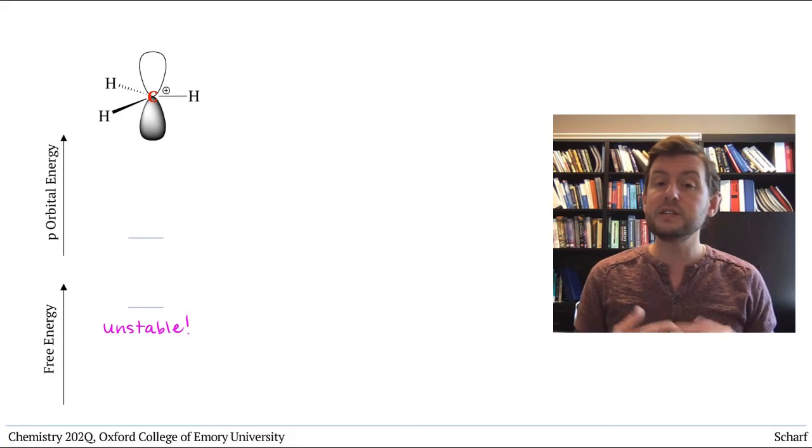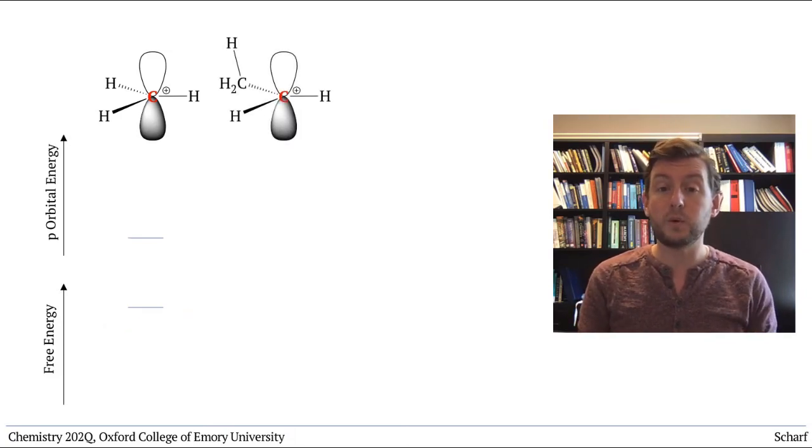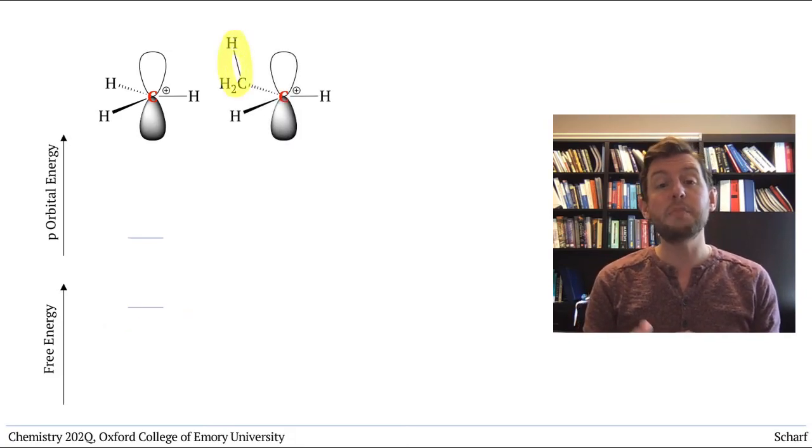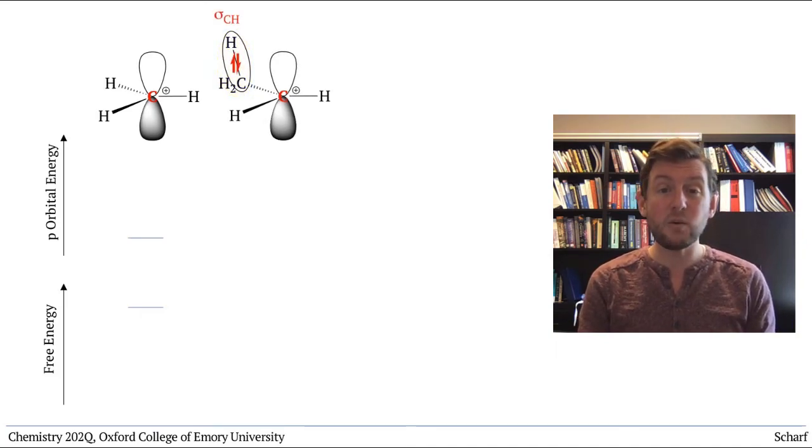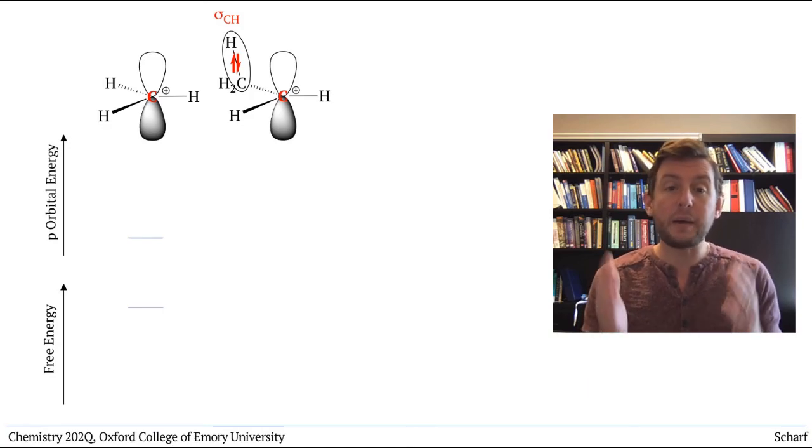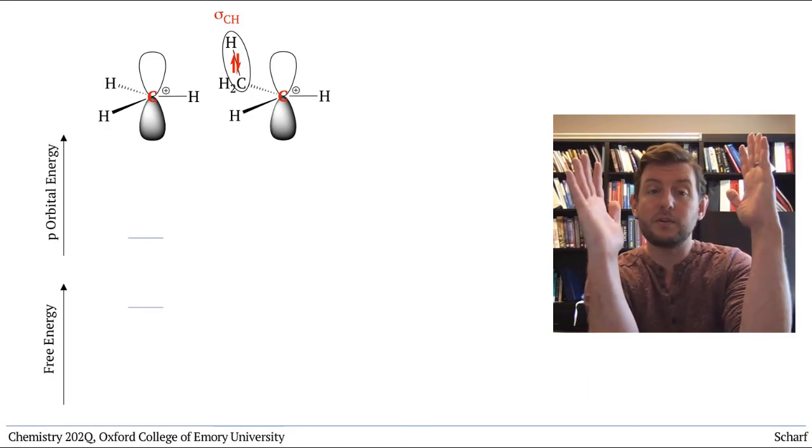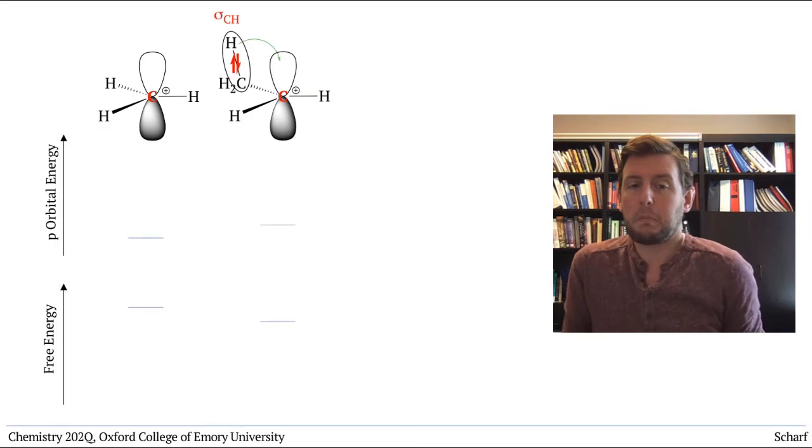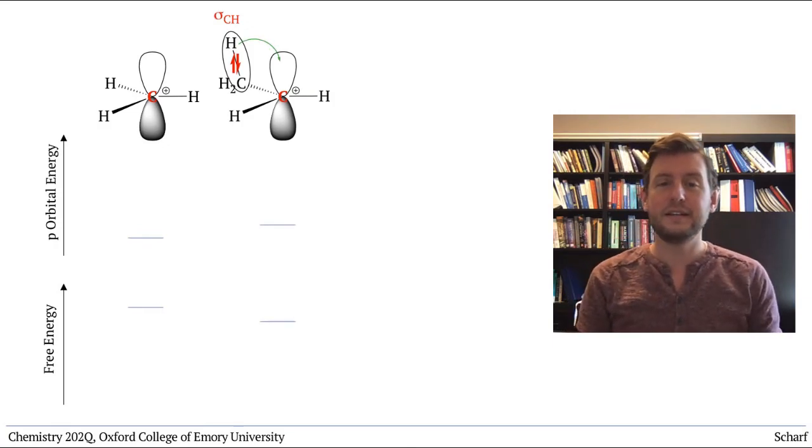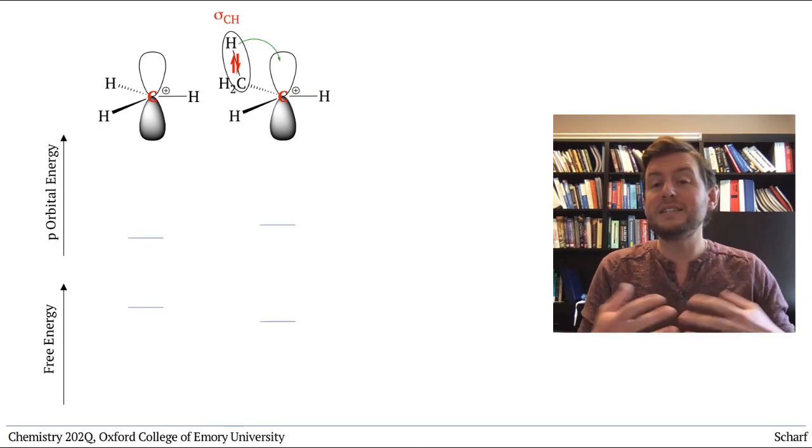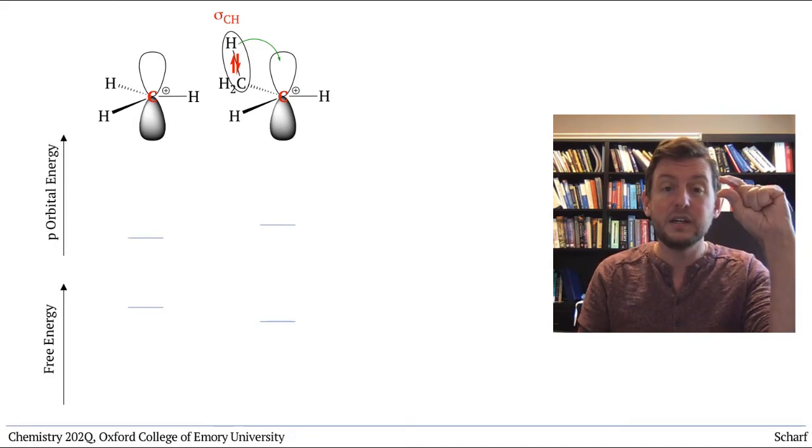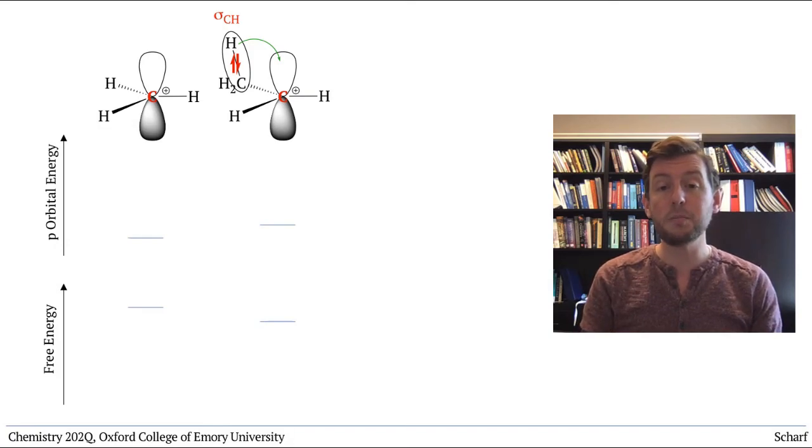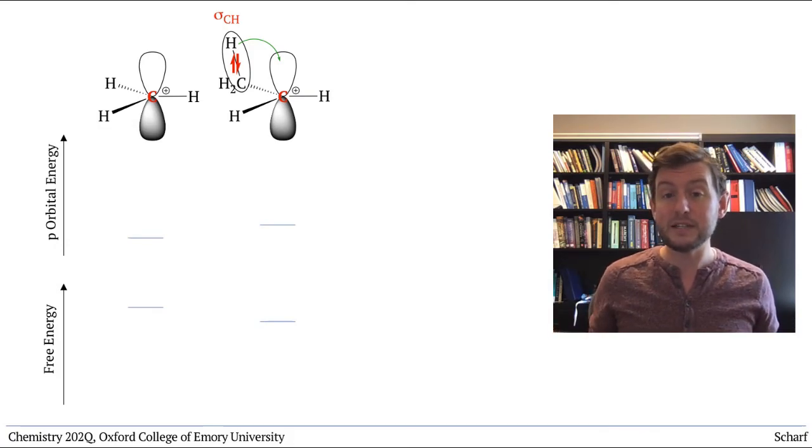If we introduce a simple alkyl group on one side, we introduce a pair of electrons in this sigma bonding orbital that align sort of parallel with the empty P orbital. They sort of rub shoulders. This effect helps to satiate the empty P orbital, but only by a small amount, because the sigma bonding orbital is quite comfortable as it is. It doesn't share its electrons well.